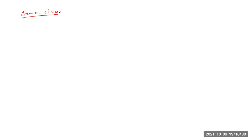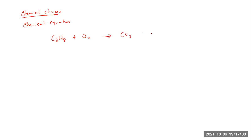When we have chemical changes, basically what we start with and what we end with are fundamentally different things. The way that we represent a chemical change or a chemical reaction is we use a chemical equation. Chemical equations are really important. For example, if we have C3H8 plus O2 going to CO2 plus some water, this is an equation — specifically, this is what is referred to as an unbalanced equation.